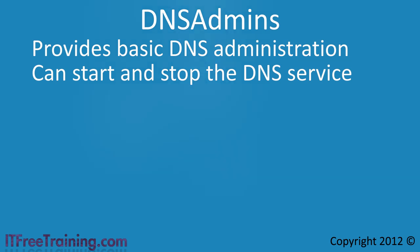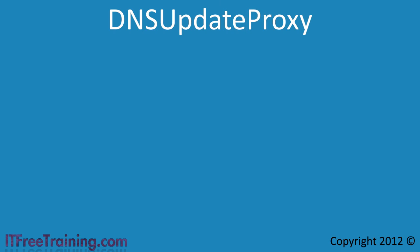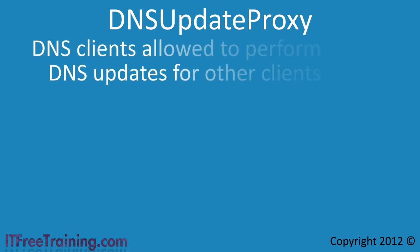The next group is DNS Update Proxy. Computers placed in this group can perform DNS updates for other clients. If you are using a Windows Server 2000 DHCP server, the server will not have enough permissions to update DNS. In order to grant this access, the computer account of the Windows 2000 DHCP server needs to be added to this group. This is just one example of how this group could be used.